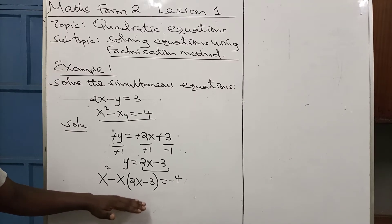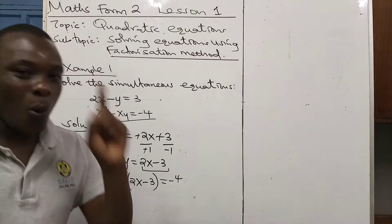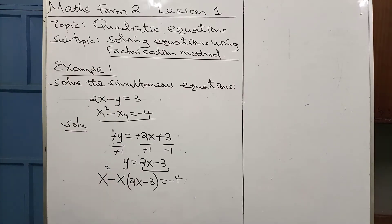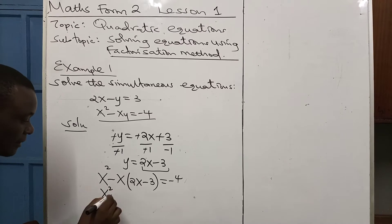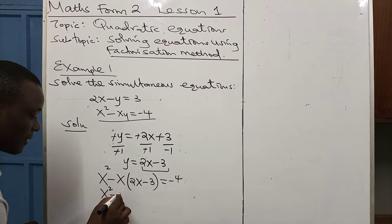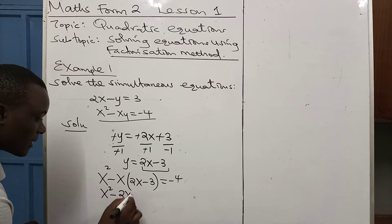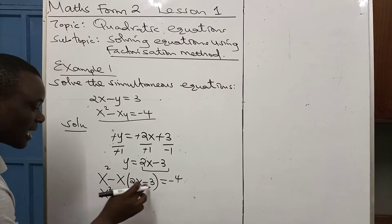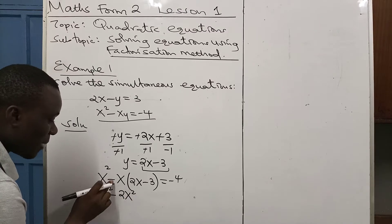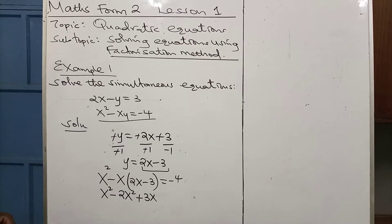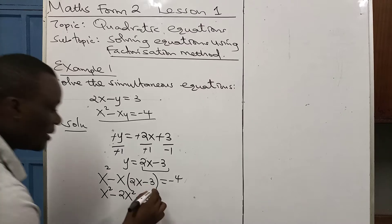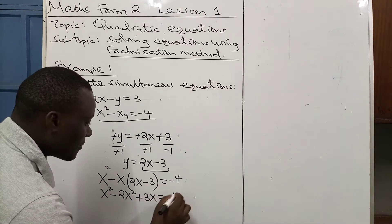We now have an equation with one unknown, which is much easier to solve. Let us open the brackets. We obtain: x squared, minus x times 2x gives minus 2x squared, then minus x times minus 3 — a minus times a minus is positive — giving positive 3x, and that equals minus 4.